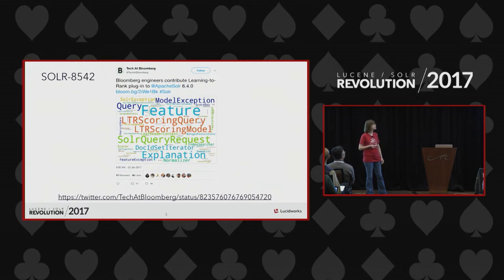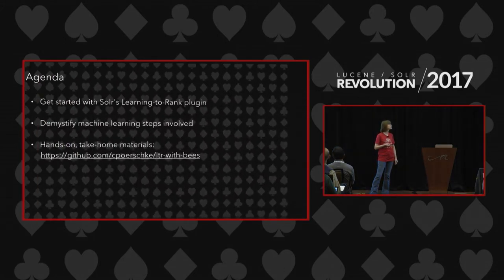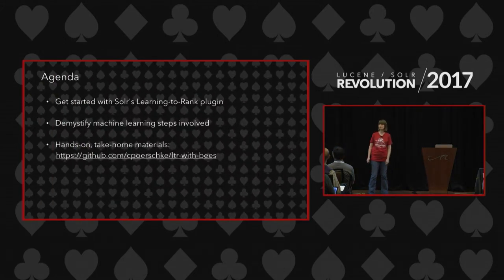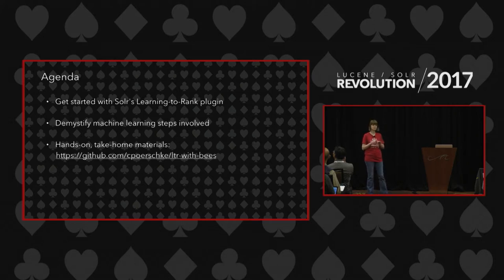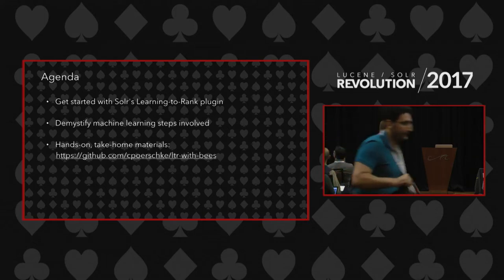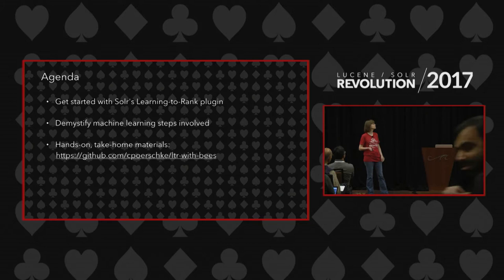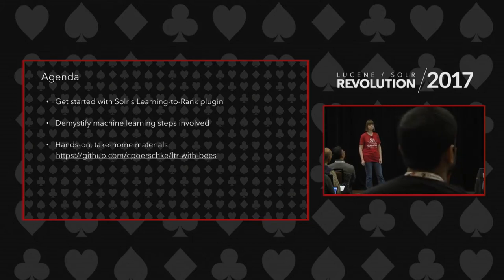That was earlier this year with Solr 6.4, and the latest version is now 6.6.1. My objective today is to convince you to start playing around with the learning to rank plugin — no previous experience with Solr needed and no previous machine learning experience needed. This is a 'just get started' tutorial, and all the materials are available on GitHub for you to take home and play around with.